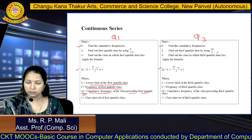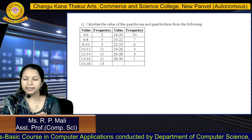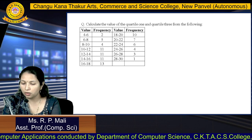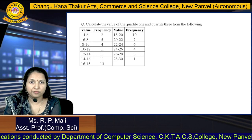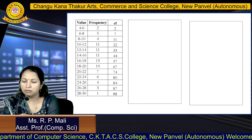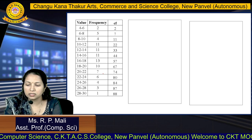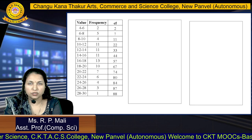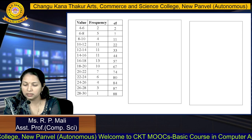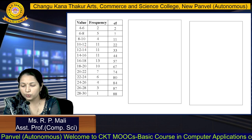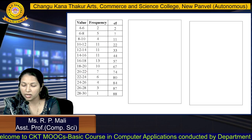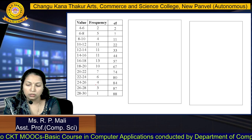We are going to solve one question based on this. Calculate the quartile 1 and quartile 3 from the following data. They have given us the values and the frequency. We are going to plot the table with values and frequency. The values are: 4 to 6, frequency 2; 6 to 8, frequency 5; 8 to 10, frequency 4; 10 to 12, frequency 11; 12 to 14, frequency 11. Likewise, you have the classes and frequencies.